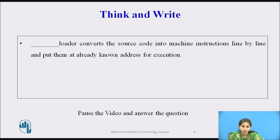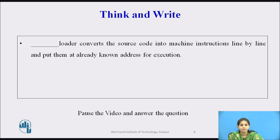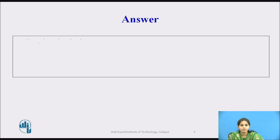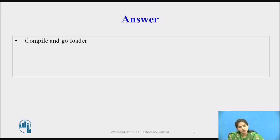Now, can you tell me: which loader converts the source code into machine instructions line by line and puts them at already known addresses for execution? Pause the video and think about it. The answer is the compile and go loader converts the source code into machine instructions line by line and puts them at already known addresses for execution.